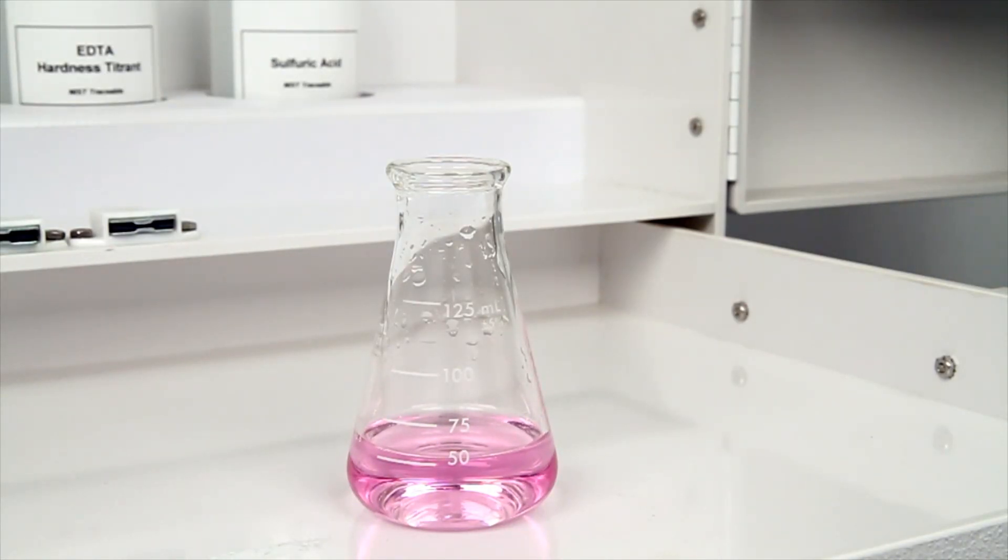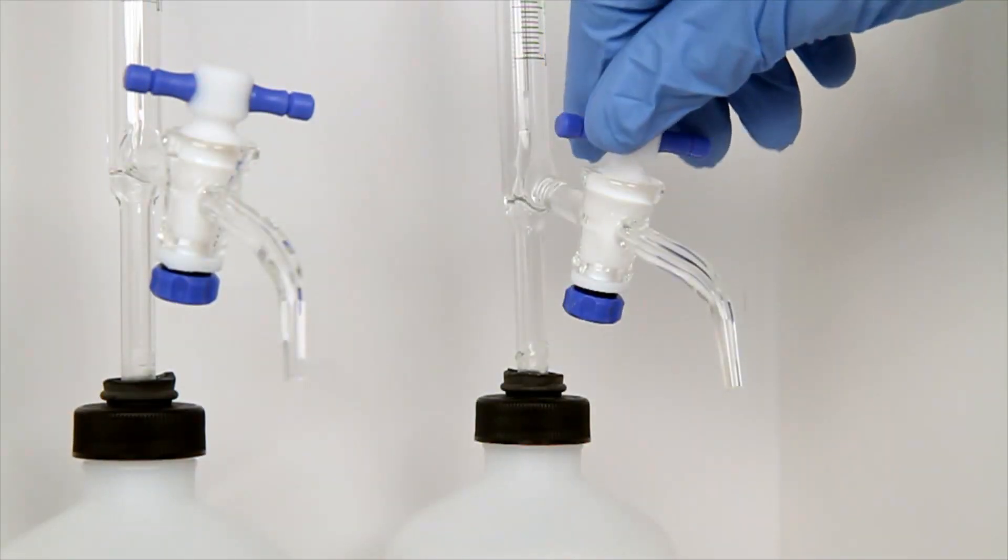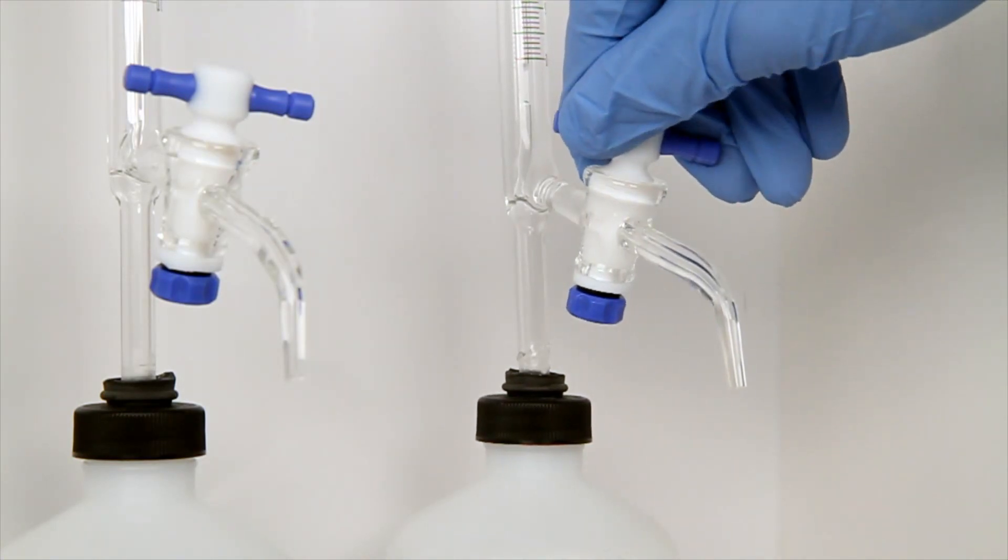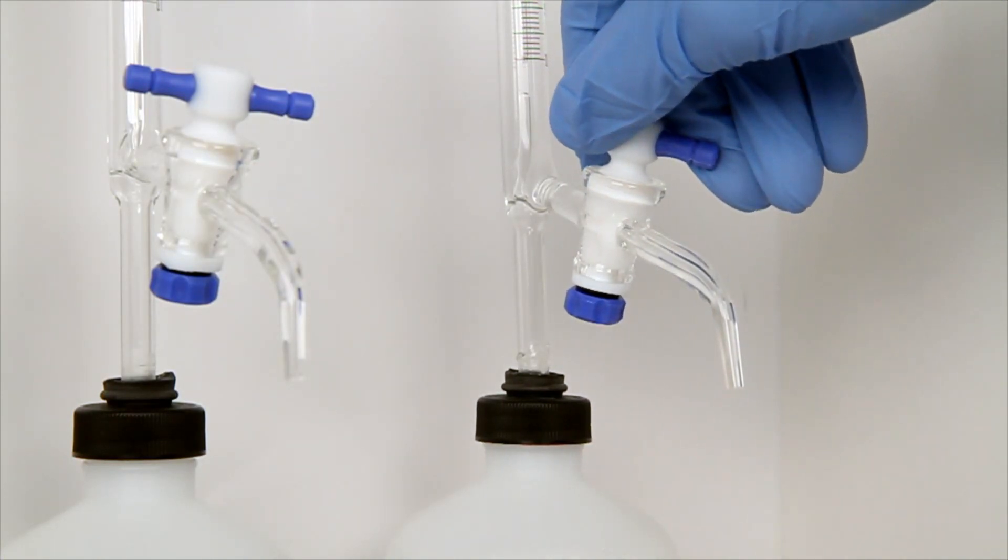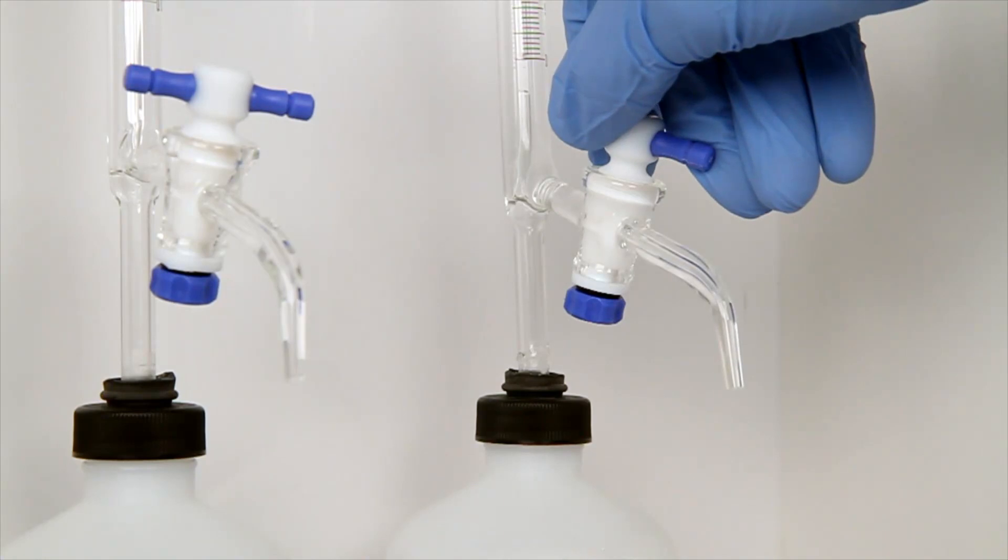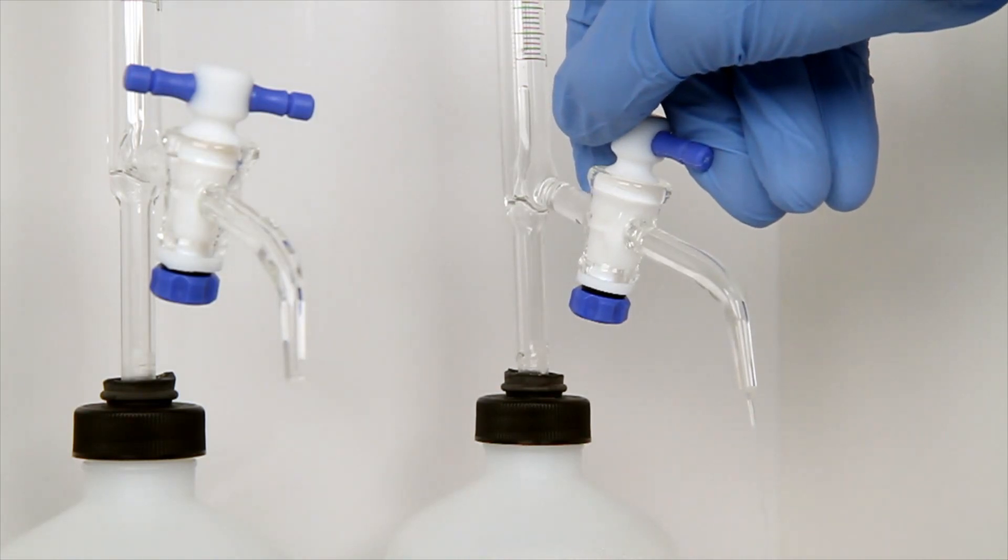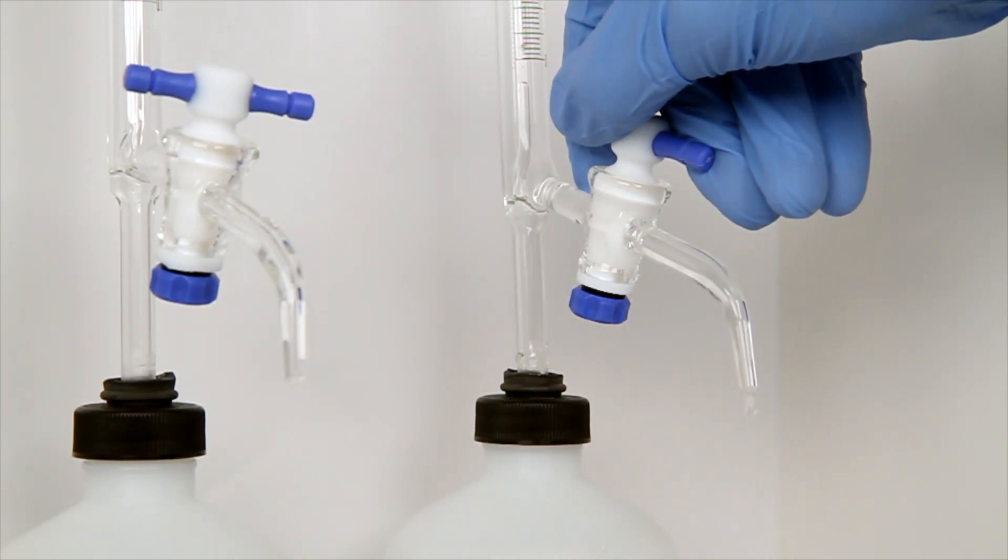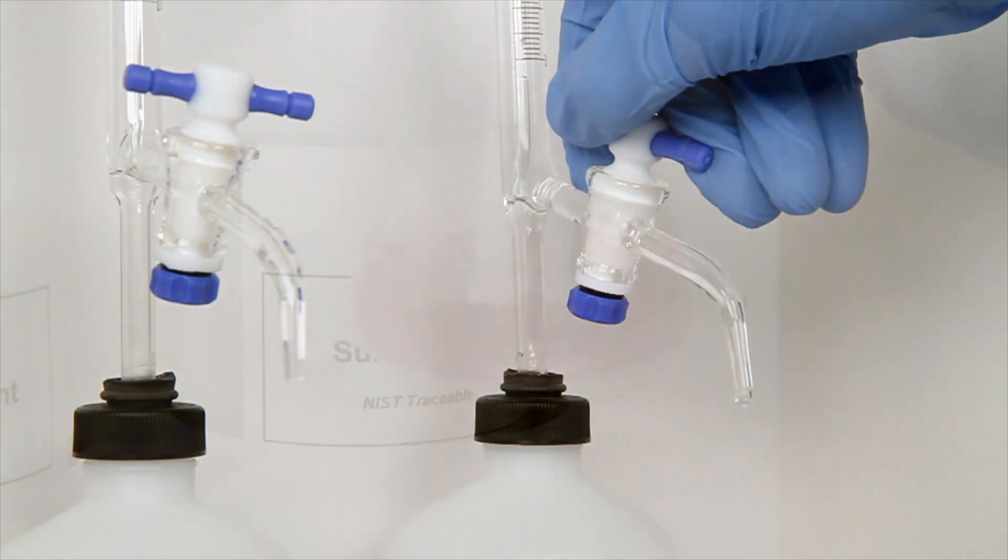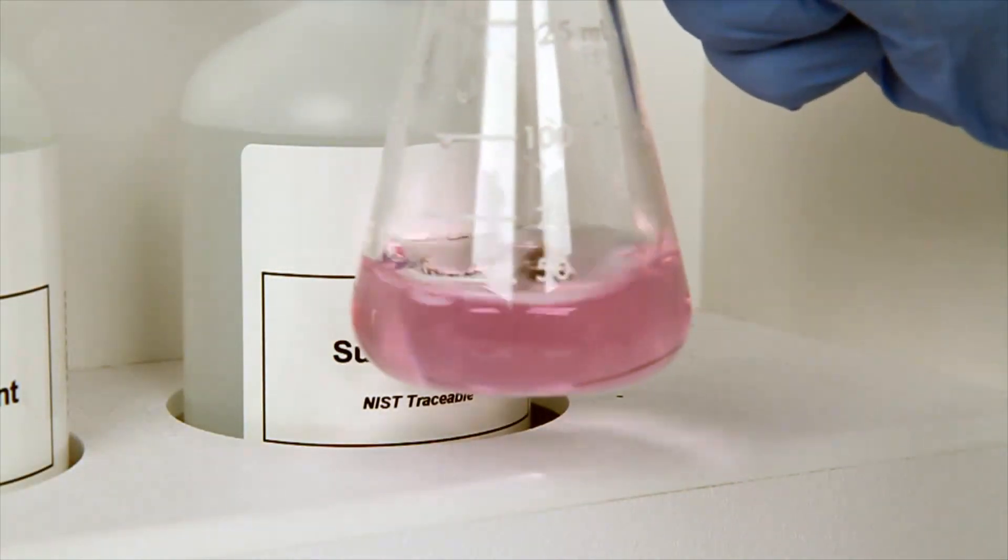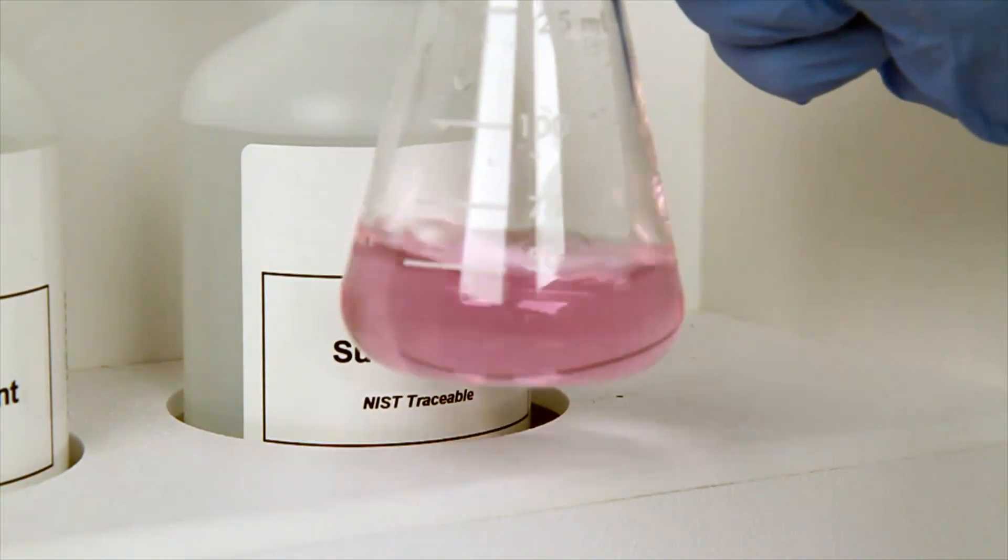In this example, the sample turned red, indicating that there is P alkalinity that needs to be titrated. The next step is to titrate the sample with the sulfuric acid titrant using the burette. Make sure you are mixing the sample after each drop until the sample color changes from red to colorless.